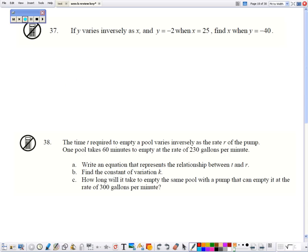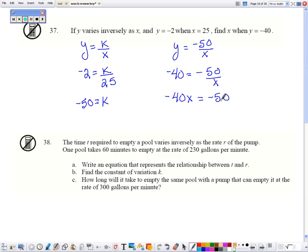So to start for 37, we have to write a general equation to first find k. So y varies inversely with x. Well, y is negative 2 and x is 25. So to solve for k, we get negative 50. So then using our initial equation with k plugged in, we can find x when y is 40. So we're going to multiply the x to this side, divide by negative 40. So x equals 5 fourths.